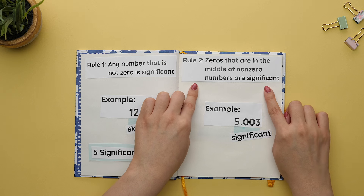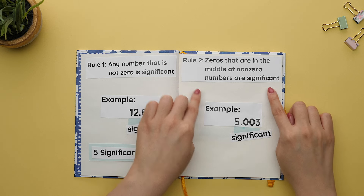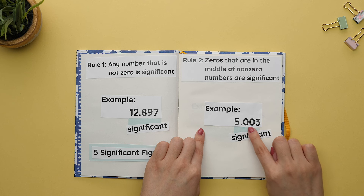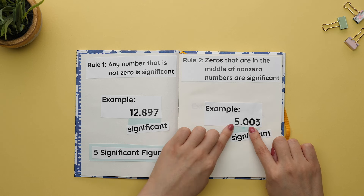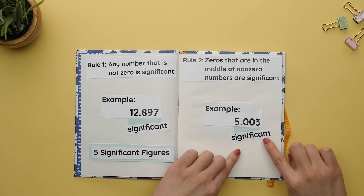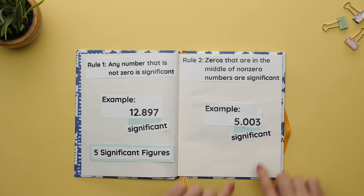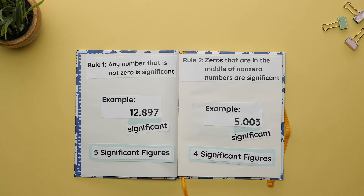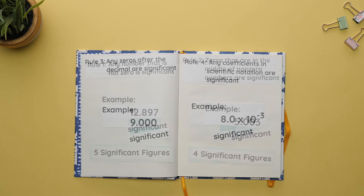Rule two: zeros that are in the middle of non-zero numbers are significant. This example has two zeros in the middle of non-zero numbers, the five and the three. So all of these numbers count as sig figs. There are four significant figures.